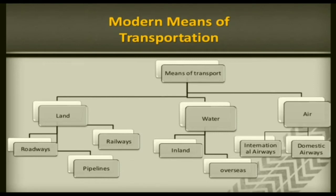Modern means of transportation are the methods of moving from one place to another. We have land, water, and air. In land we have roadways and railways. Pipeline is not in your course — pipeline means supply of LPG and liquid petroleum gas to different parts of the country. Water is divided into inland, meaning rivers, and oversea, meaning oceans. Air includes international as well as domestic airways.